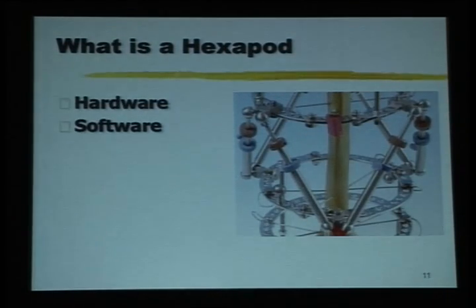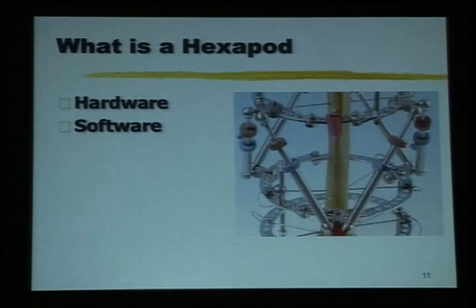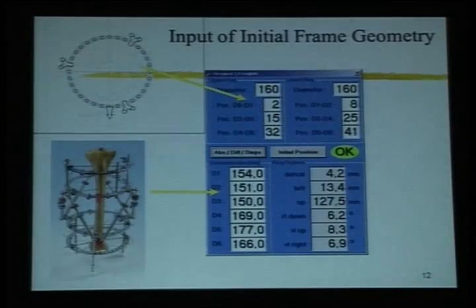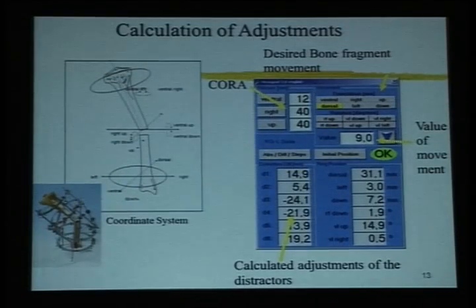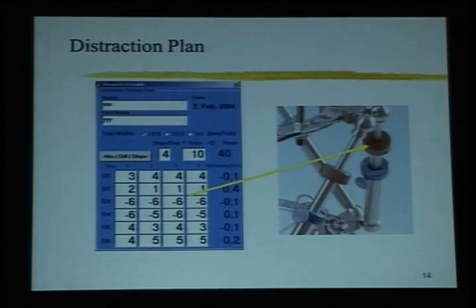Because six things are working together, it is a very complex mathematical equation that requires software to guide it — you cannot decide this on your own or with a calculator. The software does three things: it takes the current frame geometry and deformity, how the fixator is fixed, and what corrections you want to make, then gives you a distraction plan.